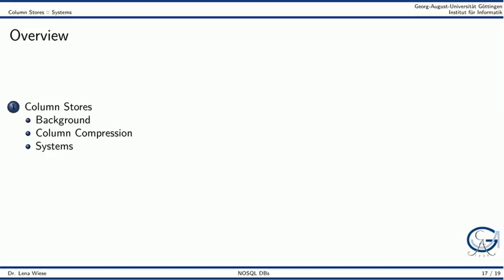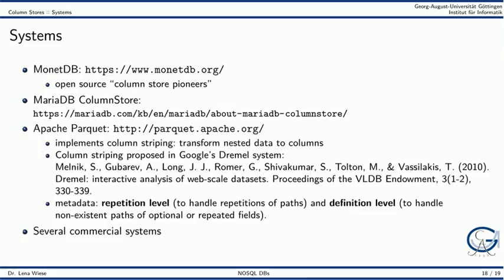We now look at some column store systems. MonetDB calls itself the open source column store pioneer. MariaDB, another relational open source database, is adding columnar storage to their system. Apache Parquet is an open source implementation of the column striping algorithm, which transforms nested data into a columnar representation. The column striping algorithm was originally proposed in the Google Dremel system, where metadata — specifically repetition levels and definition levels — are maintained to represent the nested structure. Several commercial column stores are also available.